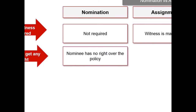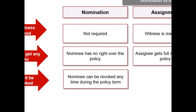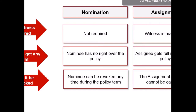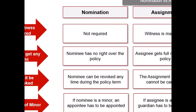Seventh, nominee can be revoked or cancelled at any time during the policy term, whereas the assignment once done cannot be cancelled but can be reassigned. Ninth, if the nominee is a minor, an appointee has to be appointed, whereas if the assignee is a minor, a guardian has to be appointed.